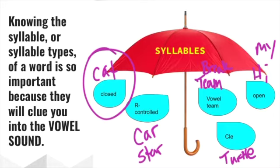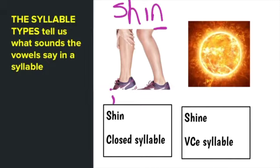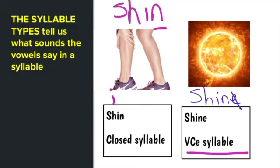For example, 'shin' versus 'shine'. I know the I in 'shin' is the short sound because it is a closed syllable — one vowel letter closed in by one or more consonants, making the I say the short sound. 'Shine,' on the other hand, is a VCE syllable type — the E is silent, it jumps over that consonant to make the I say its name. If you know the syllable type, the guesswork is out; it's like a science.